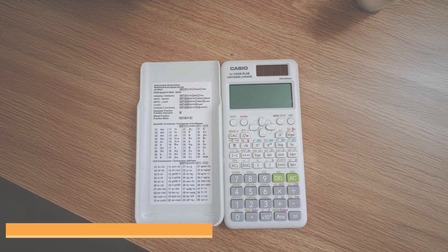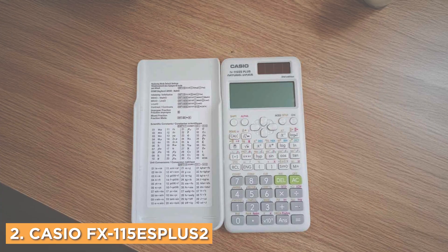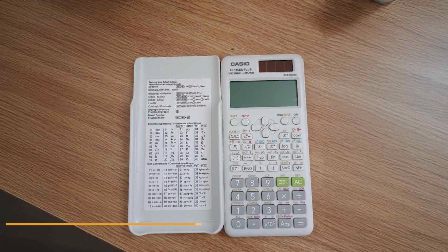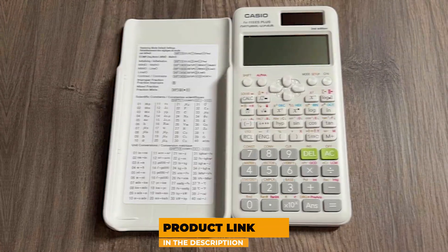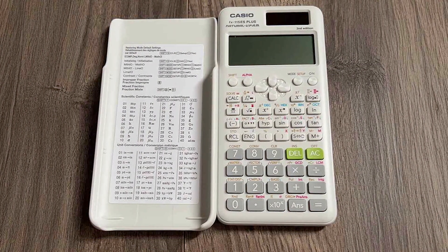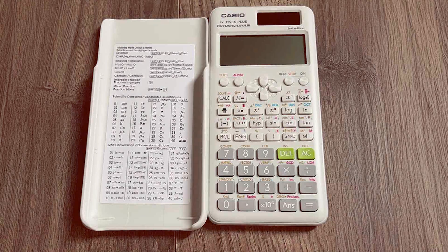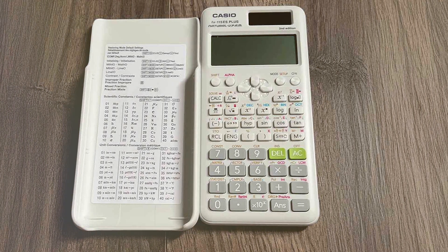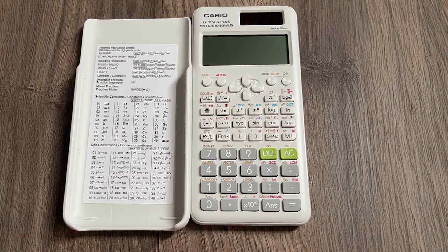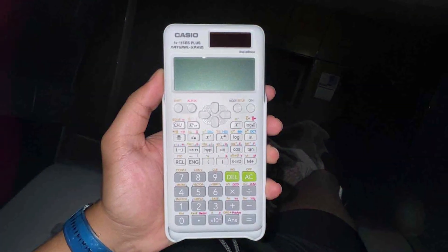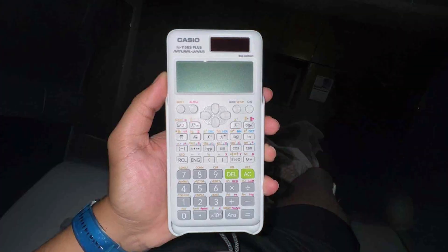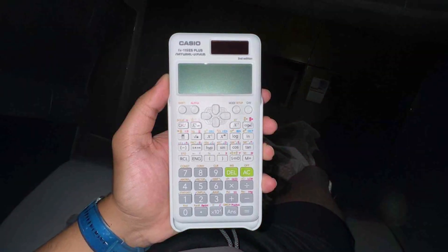Number two: Casio FX-115 ESPLUS2, a powerful scientific calculator that's packed with features to help you tackle even the most challenging calculations. The design of this calculator is both sleek and practical, with a large, easy-to-read display that provides a clear view of your calculations. Its lightweight and compact design make it easy to slip into any bag, perfect for students on the go.